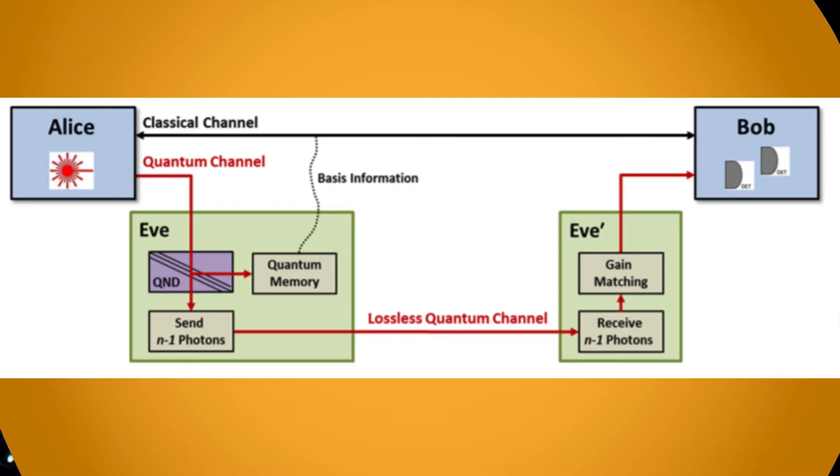Lastly, Eve listens to the classical channel for each pulse's encoding basis information and correctly measures each stored photon. In this way, Eve is able to gain complete information on Alice and Bob's secret key bits.